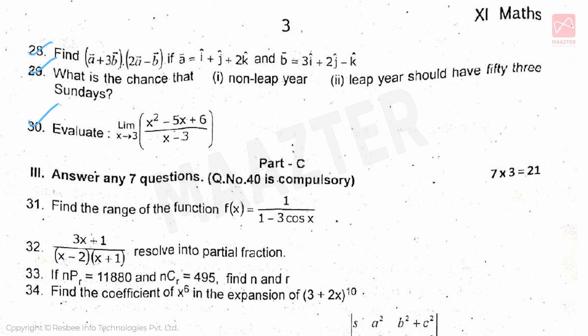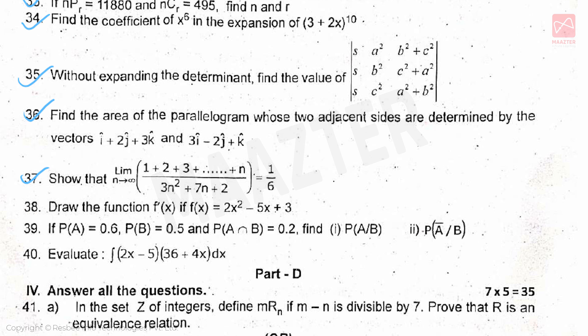Part C, total of 10 questions, we have to attend at least 7 questions and each question carries 3 marks, total 21 marks. Question number 40 is compulsory: evaluate integral (2x - 5)(36 + 4x)dx. So first multiply and simplify, then apply integration, finally simplify. Answer is 8x³/3 + 26x² - 180x + C.